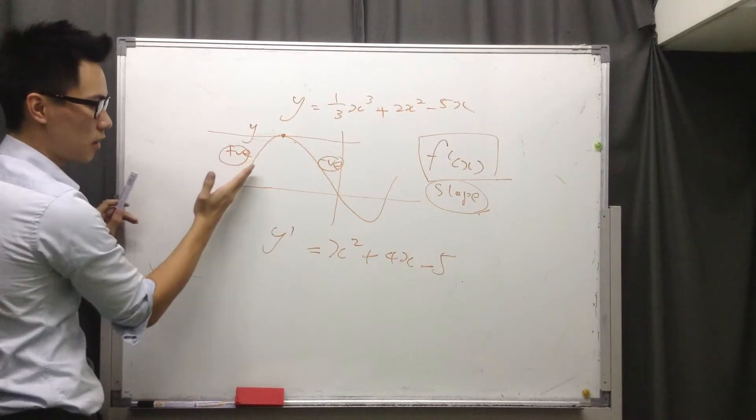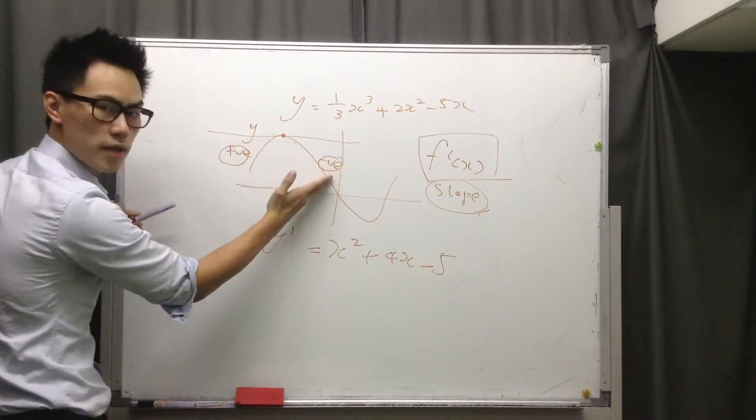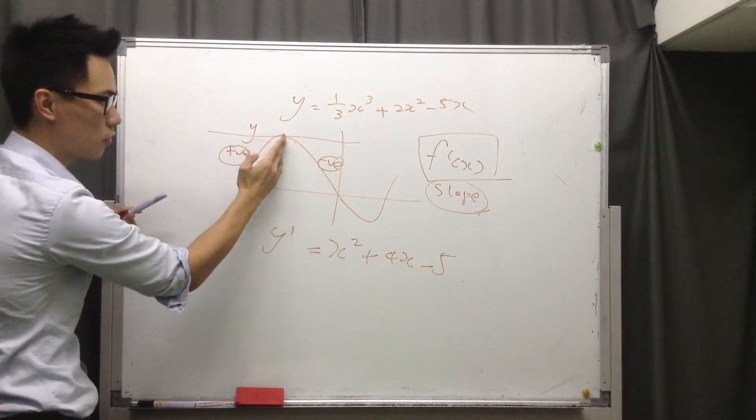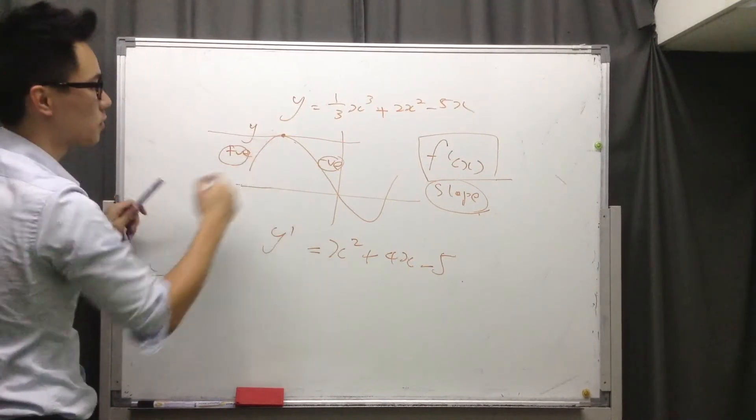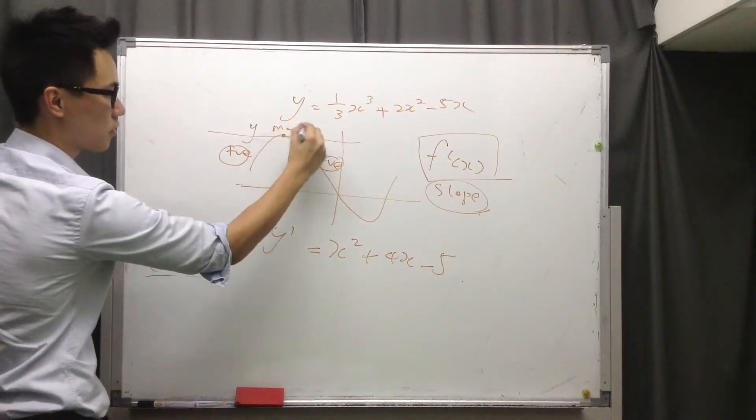Because when the slope is positive, it goes to negative, it must go through the point zero. So here, the slope equals zero.